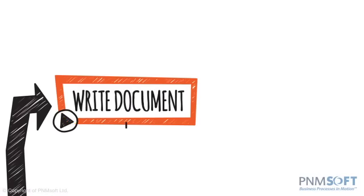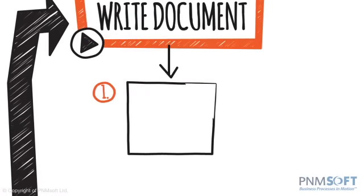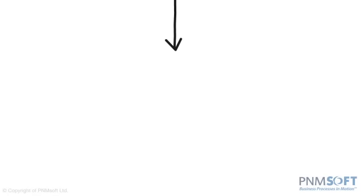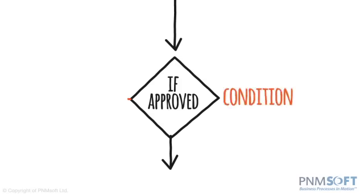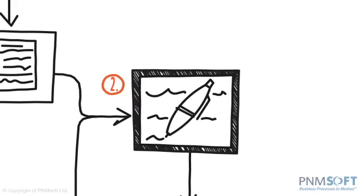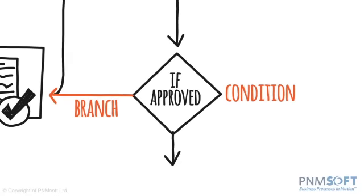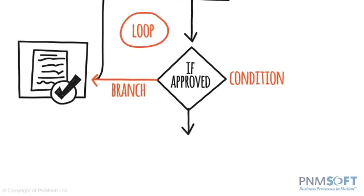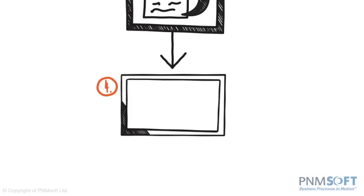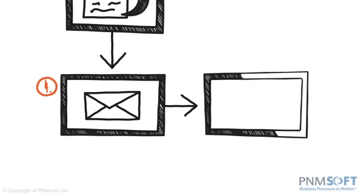Let's take a look at this example from the business world, which includes such elements. Step 1, write document. Step 2, send document for approval. If approved, send document for publishing — this is a condition that splits the flow into two branches. If there are comments, send back to writer; writer implements comments and sends again for approval — this is a loop. Step 3, publish document. Step 4, notify stakeholders that document was published.